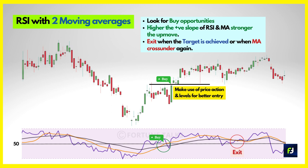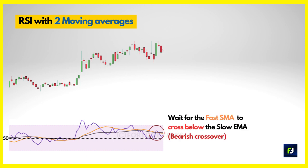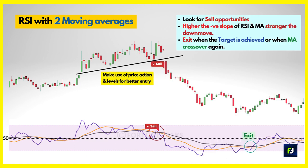Look at the slope of the moving averages to gauge if the move will be significant. Plan entries based on price action for better confirmation. On the sell side, observe when RSI pushes below both moving averages from above — preferably above the 50 midline — and if the faster MA crosses below the slow 33-period MA, look to take short trades. Use additional confirmation from bearish candlesticks. This strategy works effectively for intraday and short-term trades.